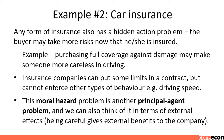Example 2: Car Insurance. Any form of insurance also has a hidden action problem — the buyer may take more risks now that they are insured. Example 3: Purchasing full coverage against damage may make someone more careless in driving. Insurance companies can put some limits in a contract but cannot enforce other types of behavior, e.g., driving speed. This moral hazard problem is another principal-agent problem and can also be thought of in terms of external effects — being careful gives external benefits to the company.